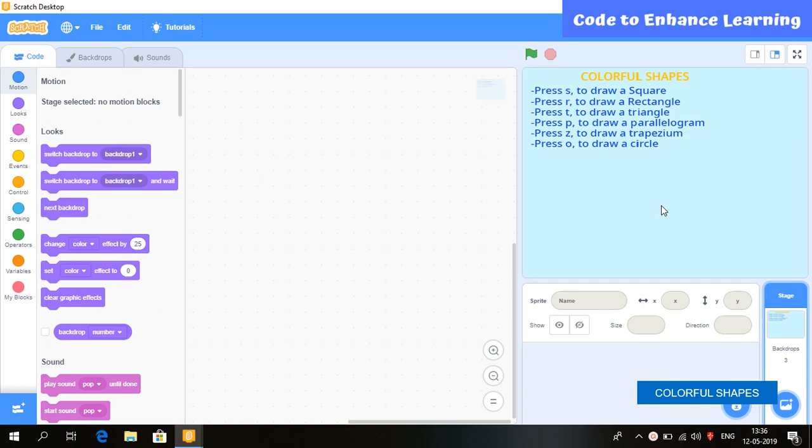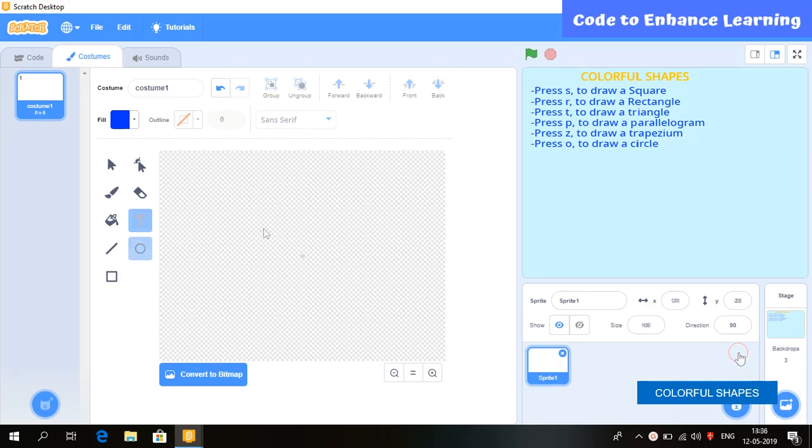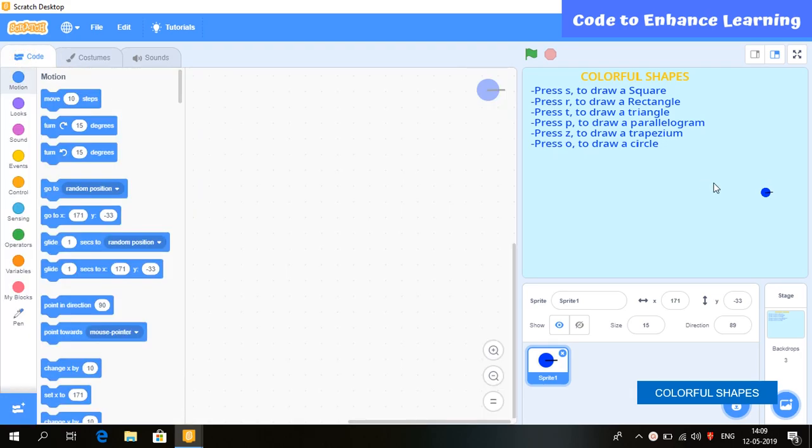After completing backdrop, we are going to draw a sprite. This is the sprite which we will use in the program. So backdrop and events have been drawn. Let's move to the programming part.